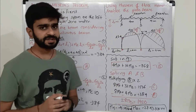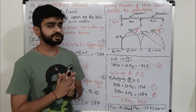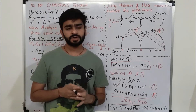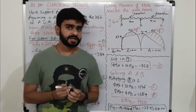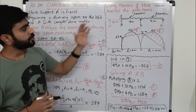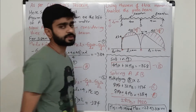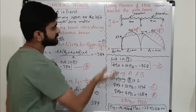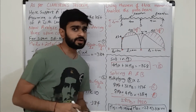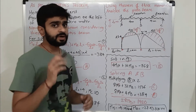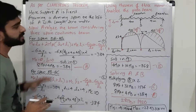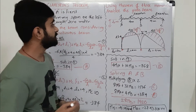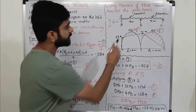Hello friends, welcome back to the video lecture series on the topic of analysis of a continuous beam. In my previous sessions we saw a basic introduction on Clapeyron's theorem, then we solved a numerical based on a two-span continuous beam and then a three-span continuous beam. This is the fifth part of the topic and today we will be solving a two-span continuous beam.